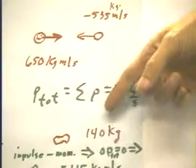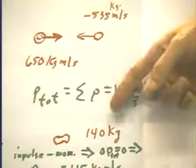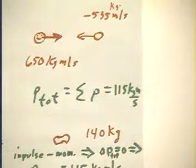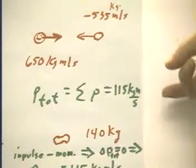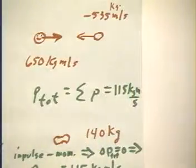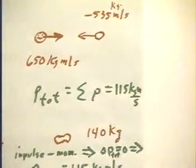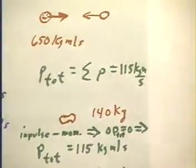That momentum will be confined to, or reside in, an object of mass 140 kilograms. The 65 kilograms and 75 kilograms of the two players will add up to make a 140 kilogram mass with a total momentum equal to the momentum we had before.